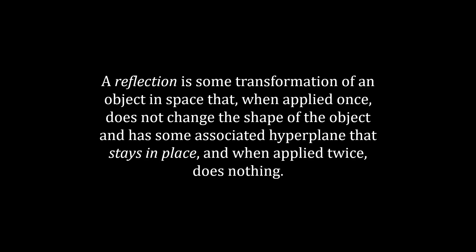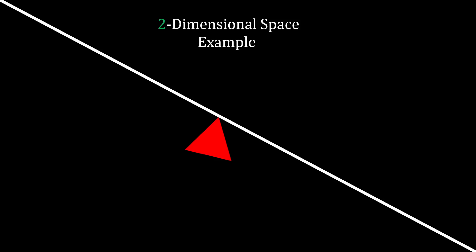So in non-nerdspeak, a reflection is some transformation of an object in space that, when applied once, does not change the shape of the object, and has some associated hyperplane that stays in place, and, when applied twice, does nothing. This is easiest to demonstrate in two dimensions with a line and some shape. Here we have a line and a triangle. Reflecting once gives a mirror image of the triangle on the other side of the line. Note that this line, which is being used to reflect the triangle, is itself the invariant hyperplane. Reflecting a second time then undoes the original reflection.